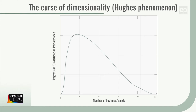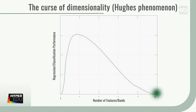The figure here illustrates how the predictive power of a classifier or regressor first increases as the number of features or bands used is increased, but then decreases. This phenomenon is known as the curse of dimensionality, or the Hughes phenomenon. It can therefore be useful to apply dimensionality reduction methods before or as part of the actual image analysis.